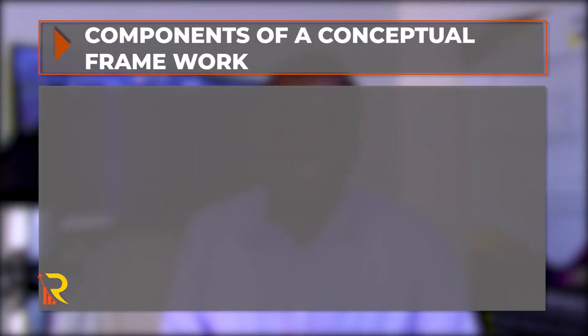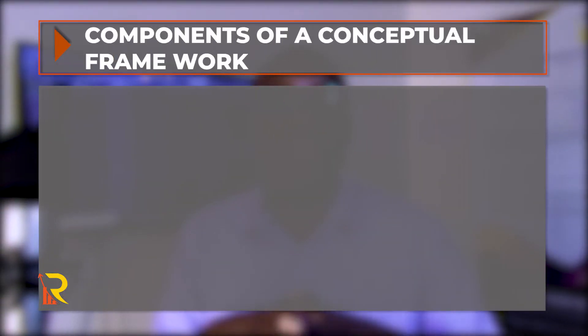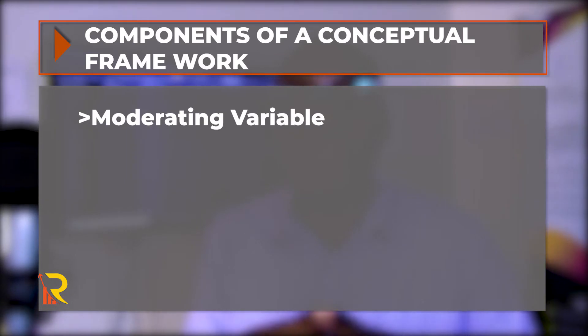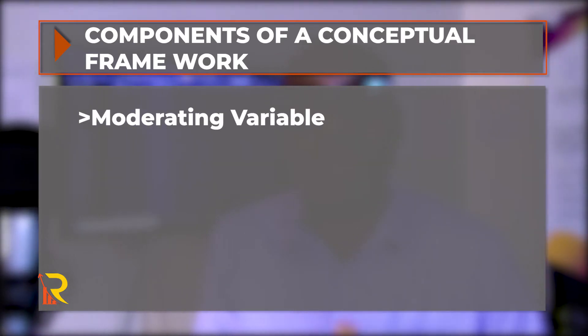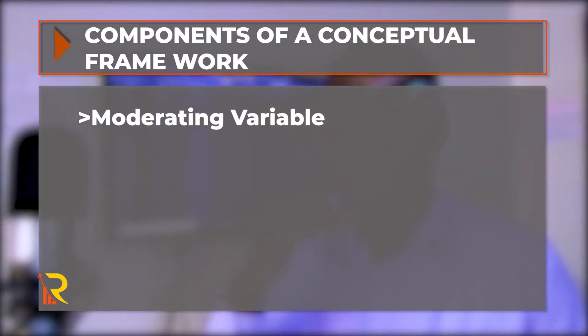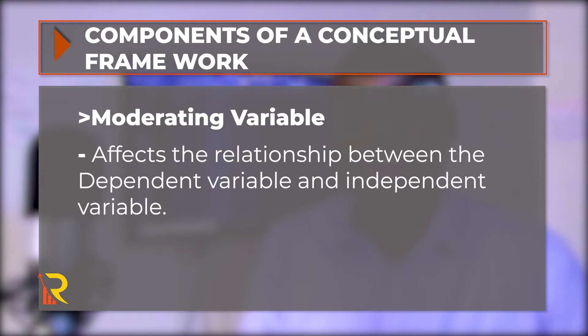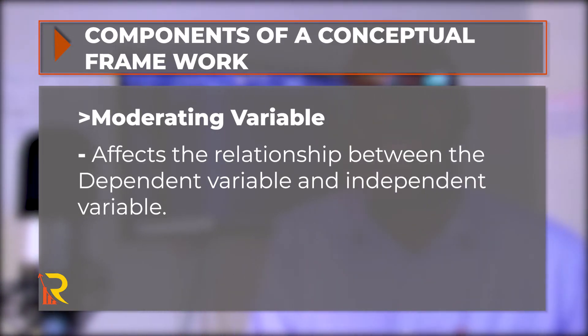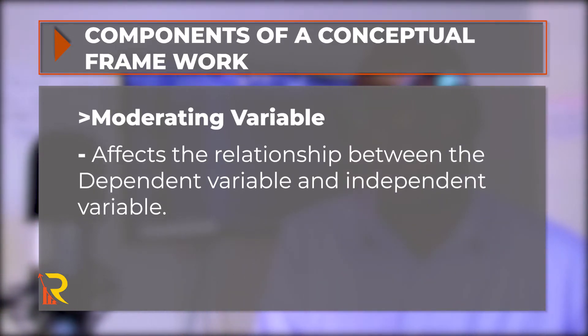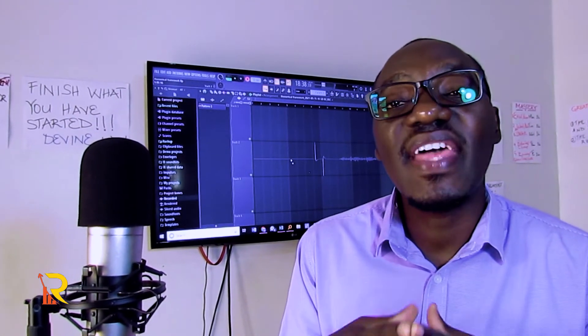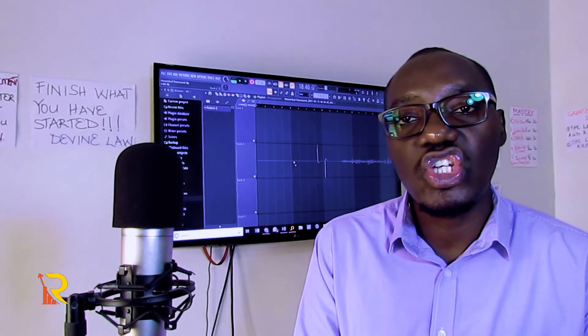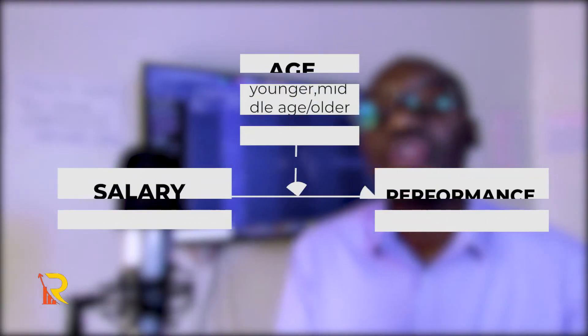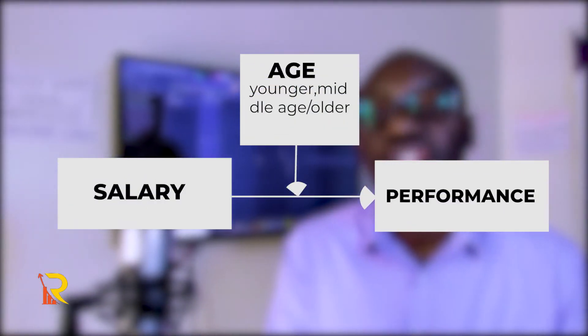Another component of a conceptual framework is the moderating variable. A moderating variable is a variable that affects the relationship between the dependent variable and the independent variable — it can make that relationship either stronger or weaker. For example, age may be a moderating variable for the relationship between salary and performance.